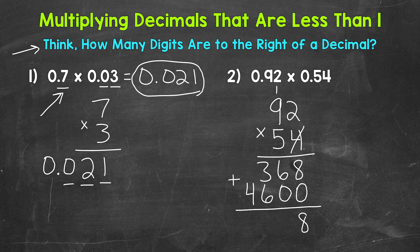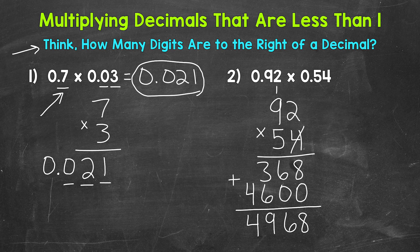So 8 plus 0 is 8, 6 plus 0 is 6, 3 plus 6 is 9, and then we have a 4. Now we're ready to place the decimal in our answer. So we need to take a look at the original problem and see how many digits are to the right of a decimal.